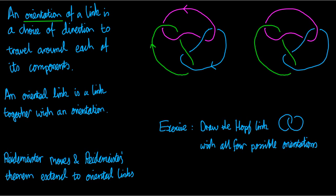Or I could make a completely different set of choices. I could choose to travel clockwise around the pink component, still clockwise around the green one, but instead anti-clockwise around the blue one. That's what an orientation of a link is, and we indicate orientations on diagrams by drawing arrows.